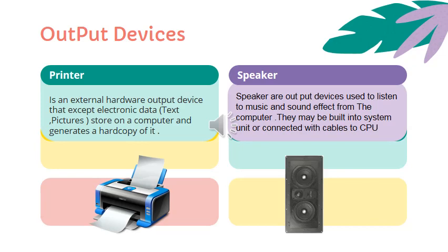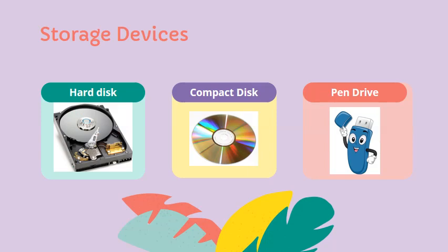Here are some storage devices: Hard Disk, Compact Disk, and Pen Drive. Hard disk stores all the data from the user system and is present inside the CPU box. Compact disk stores a large amount of data. It is a portable device, easy to carry, and is also known as a CD. Pen drive is a small portable device that stores a very large amount of data. It works faster than other storage devices. A pen drive has to be plugged into the USB port of the computer.